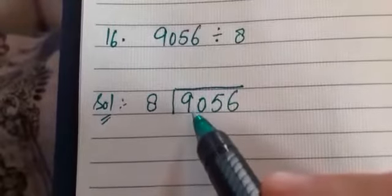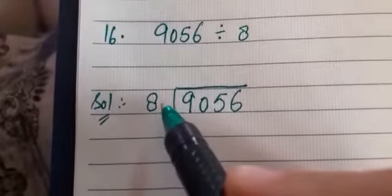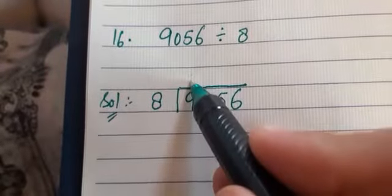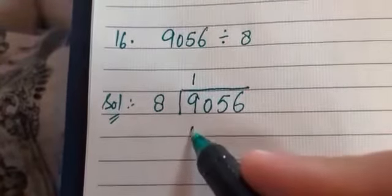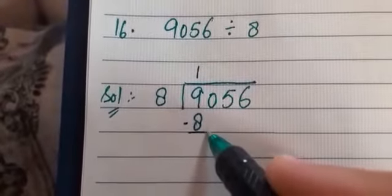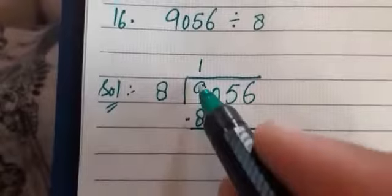As learned in the previous questions, we will divide one digit at a time. Okay, so first we will divide 9. So in the table of 8 we do not find 9, but there is 8 ones are 8, a number smaller than 9.